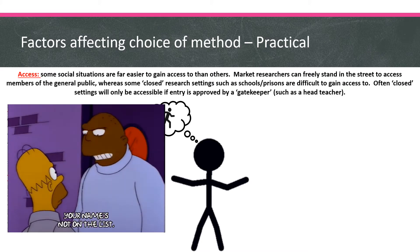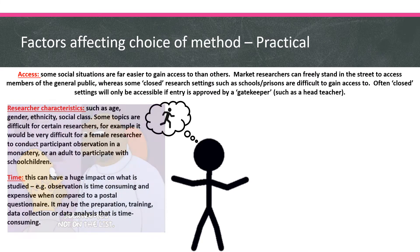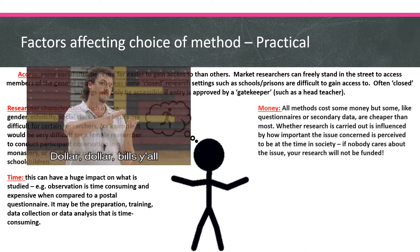Access, as the name suggests, is whether you can get access to the people you want to study — whether you can access the group you're interested in. This might be people on the street, a protected group like children in a school, or people in a prison. Closed settings are settings where there isn't easy access; you can't just walk in. In these cases, you would need someone like a gatekeeper or a headteacher in a school to provide access and let you in.